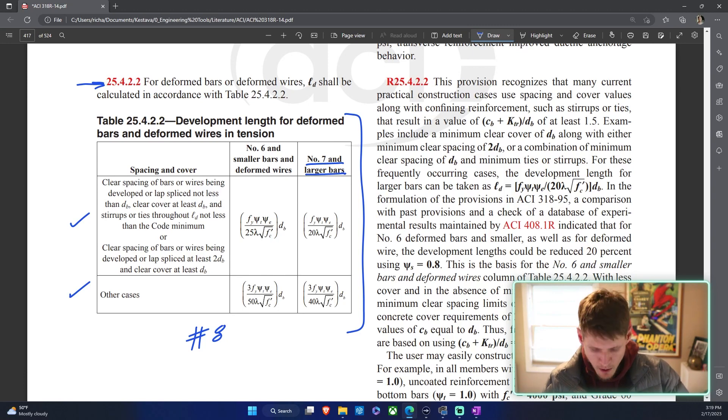So that's clear spacing between those bars, those number eights. Clear cover at least of diameter bar and the stirrups or ties throughout l sub d not less than the code minimum. Well we don't have stirrups or ties through our development. We decided that we don't have those last time, so this first part really doesn't apply to us or we can't say that we're meeting those criteria. Or you have part two: clear spacing of bars or wires, we have bars so cross out wires, being developed or lap spliced at least two diameter of bar and clear cover at least diameter bar.